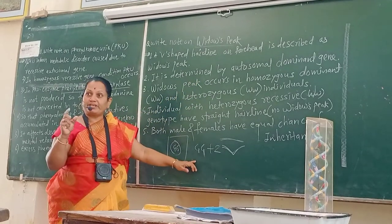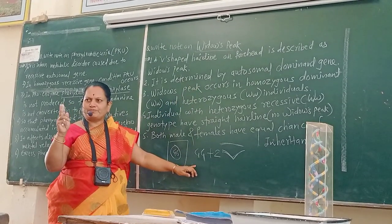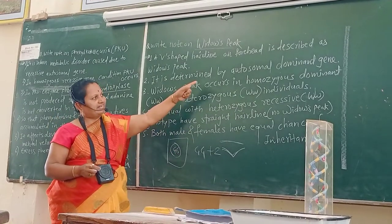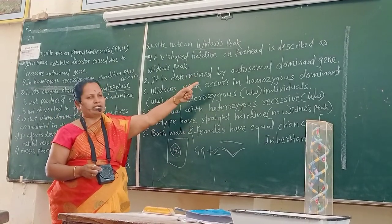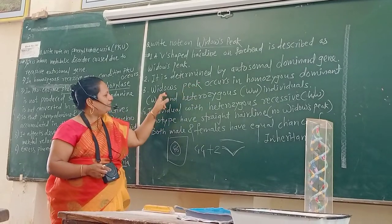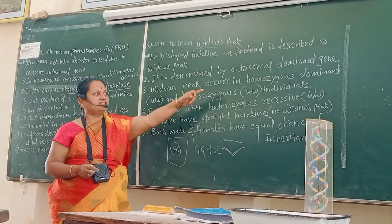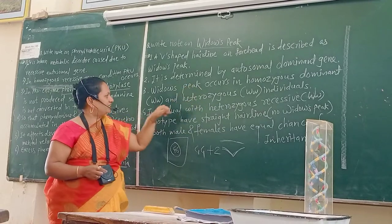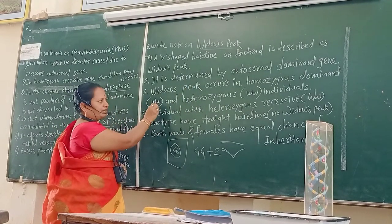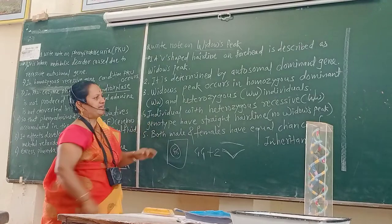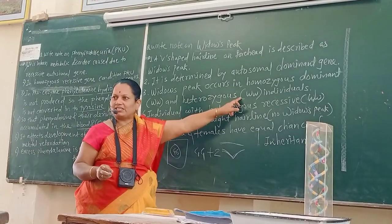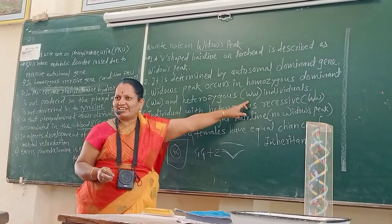Why autosomal dominant gene? There are two types of genes: dominant and recessive. The widow's peak characteristic is determined by an autosomal dominant gene. Widow's peak occurs in homozygous dominant condition — that is, capital W, capital W — as well as in heterozygous condition, which has one dominant and one recessive gene.